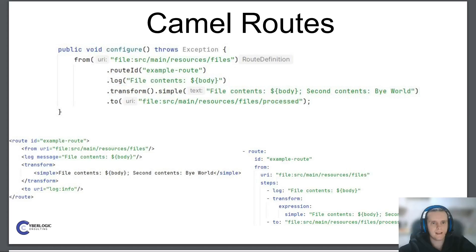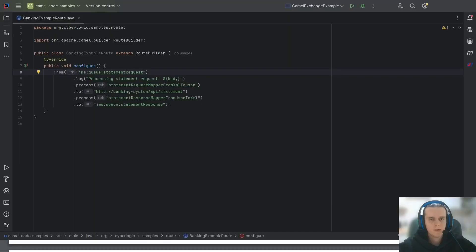Each Camel route is a series of steps that will be executed with our data. Each Camel route starts with the 'from' DSL element, which specifies the source or input for our route. For example, 'from file' means the input will be a file in the specified directory. In the example from the previous video we specified 'from JMS queue', which means the input will be a JMS request.